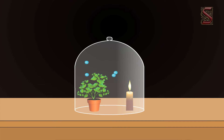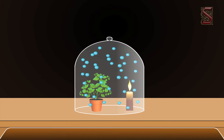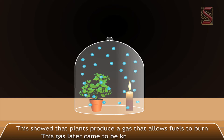Priestley put a mint plant in a closed container with a burning candle. The candle flame used up the oxygen and went out. After 27 days, Priestley was able to relight the candle. This showed that plants produce a gas that allows fuels to burn. This gas later came to be known as oxygen.